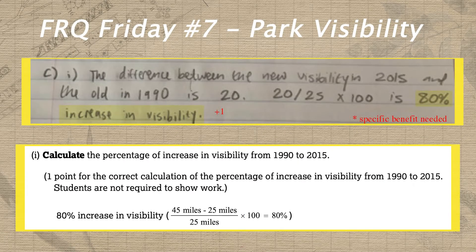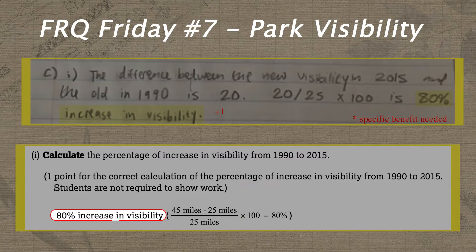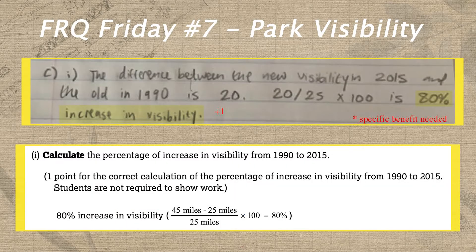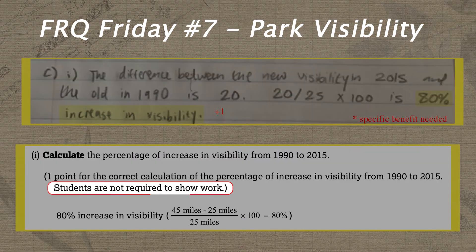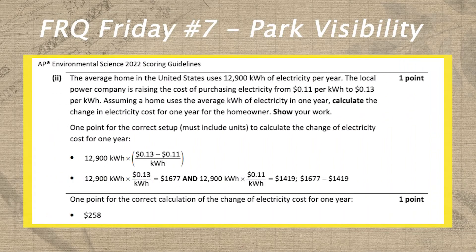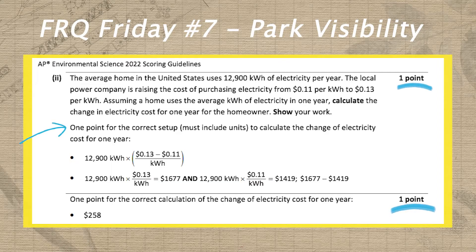In question C part one, Hannah correctly calculated the increase in visibility from 1990 to 2015 as an 80% increase, earning her another point. Just a quick note here that this is an abnormal calculation prompt in the sense that it didn't offer a point for the correct setup with units. Remember that on your exam, calculation points will be worth two points and will require correct setup with units in order to earn one of those two points.